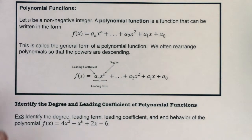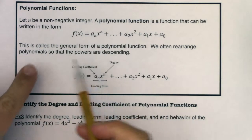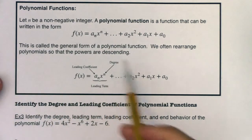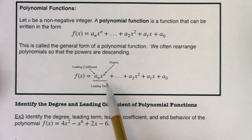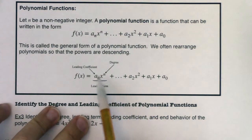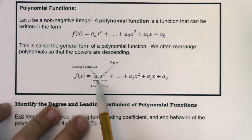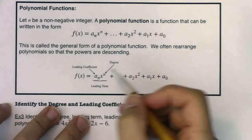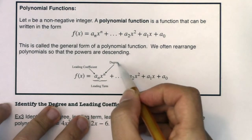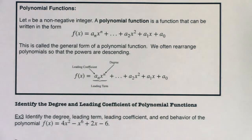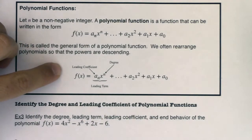Let me get some terminology down. a_n is called the leading coefficient. The term as a whole — a_n times xⁿ — is called the leading term. And n is the degree of your polynomial: whatever the highest-degreed term is, that is the degree of your polynomial. With that, we're going to take a look at an example and unpack all of these vocabulary terms.